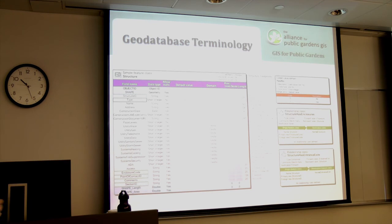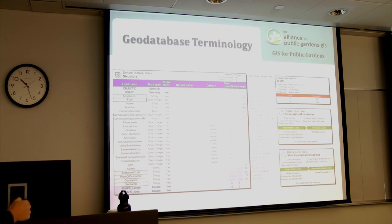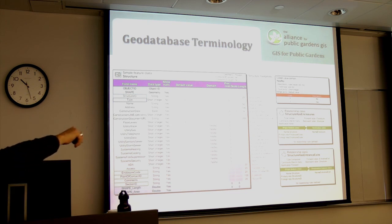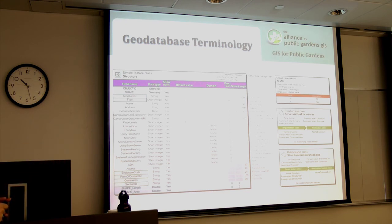If we drill down further and zoom in to the structure feature class, we can see a detailed list of all the fields associated with it: each structure has a type, a name, an address, the date it was constructed, life expectancy, even a link to the construction document or blueprint for the building, number of levels, and whether it has water utilities, gas utilities, telephones, sewer, heating, cooling, and so on. It also records whether it's ADA accessible. Under the domain column, you can see a yes-no domain associated with fields — for example, the only possible values for whether a building has water utilities are yes or no. These are the domains that control what kind of data you can put into different fields, and you have the ability to customize those to your heart's content.